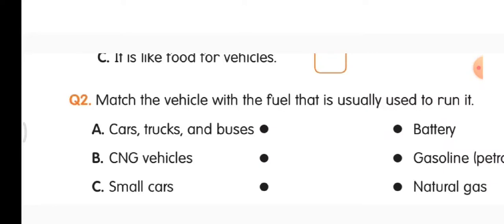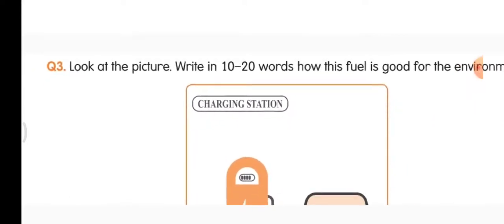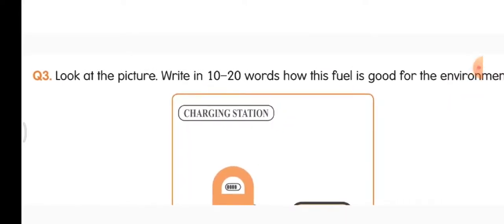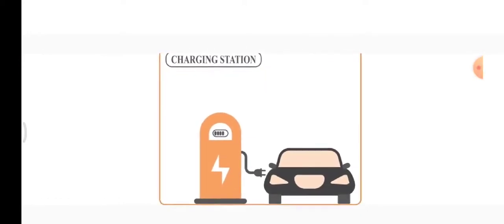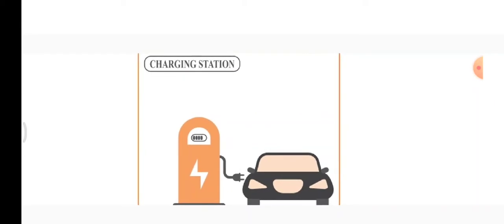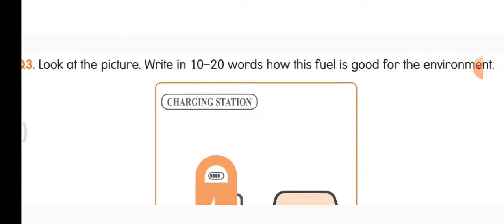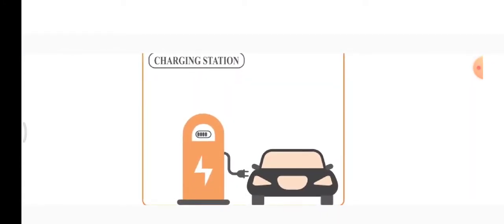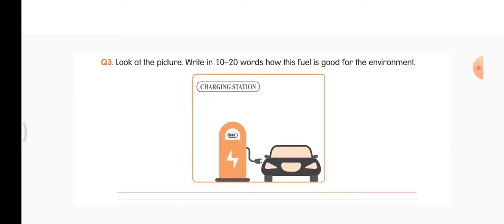Small cars run on battery. Now move to the third question. Look at the picture and write in 10 to 20 words how this fuel is good for the environment. In the picture we can see a car using electricity to move. How can electricity be environmentally friendly?